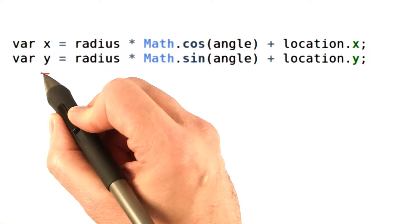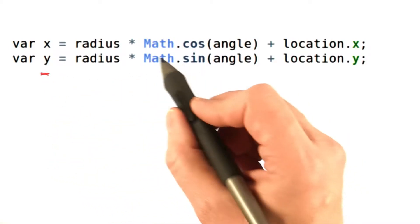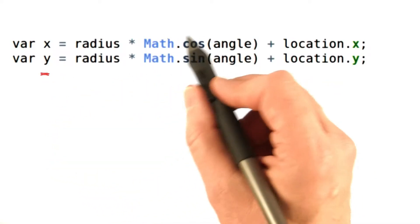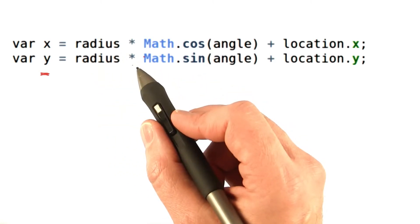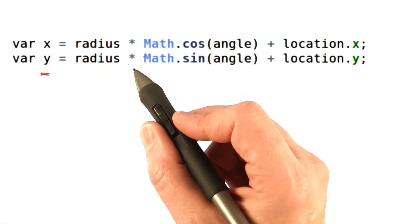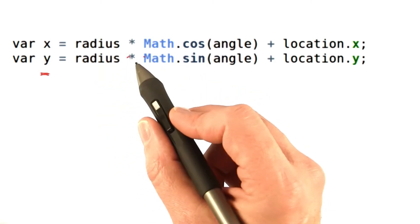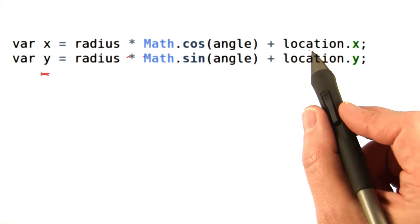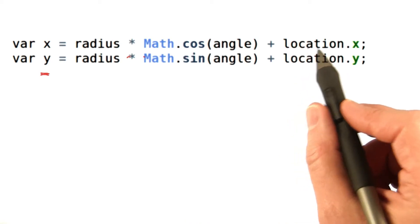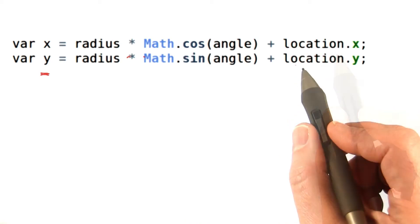You again have to modify the x and y values computed by multiplying the original point by the radius — this expands or contracts these points around the origin. After that, you add the location to move the whole polygon elsewhere, same as before.